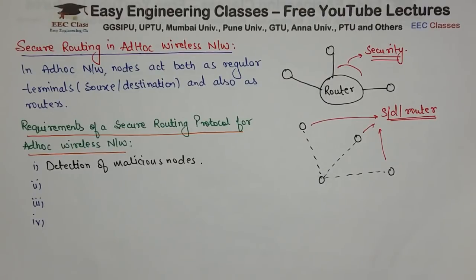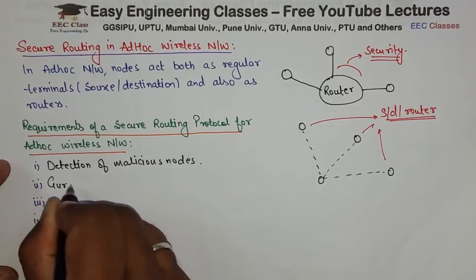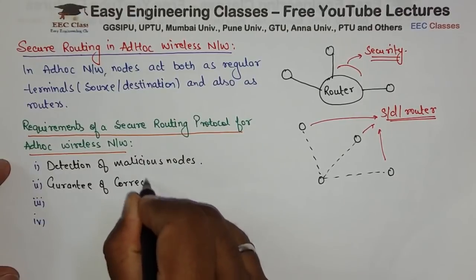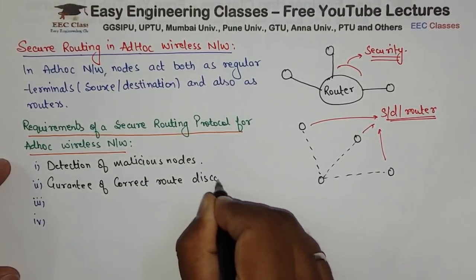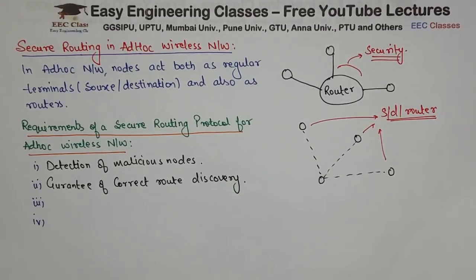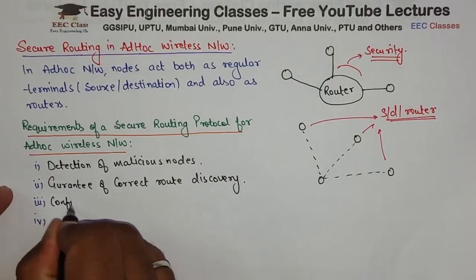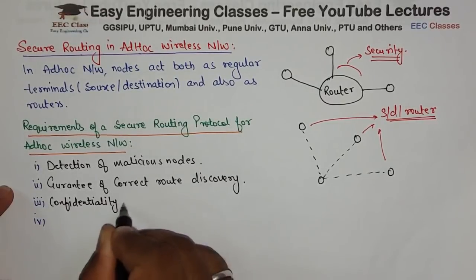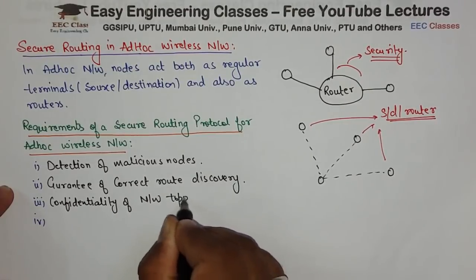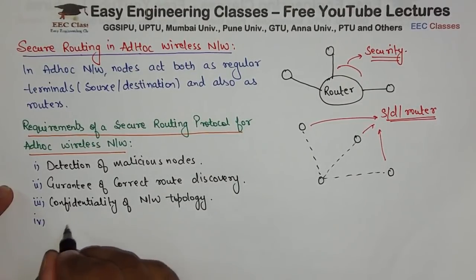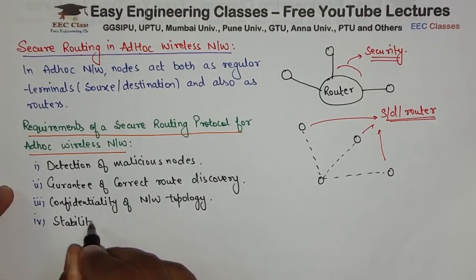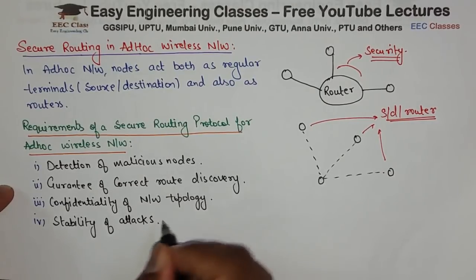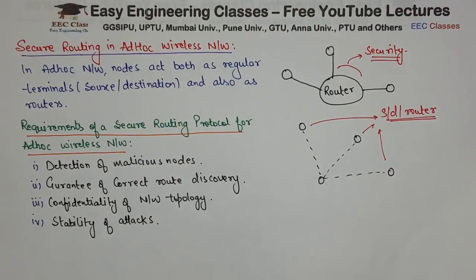The second requirement is the guarantee of correct route discovery. The third requirement is confidentiality of network topology — we don't want outsiders to know the network structure. The fourth requirement is stability against attacks: if an attack occurs, we must cope with the effect, nullify and minimize it so the network does not go completely down.